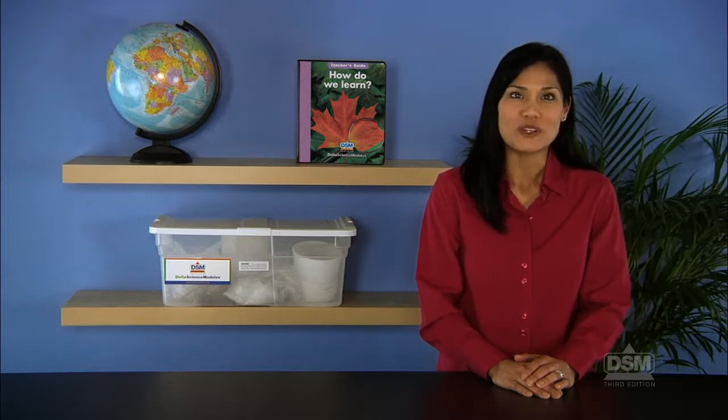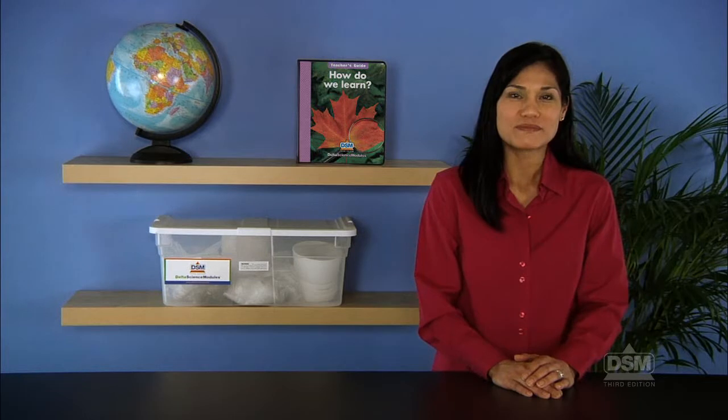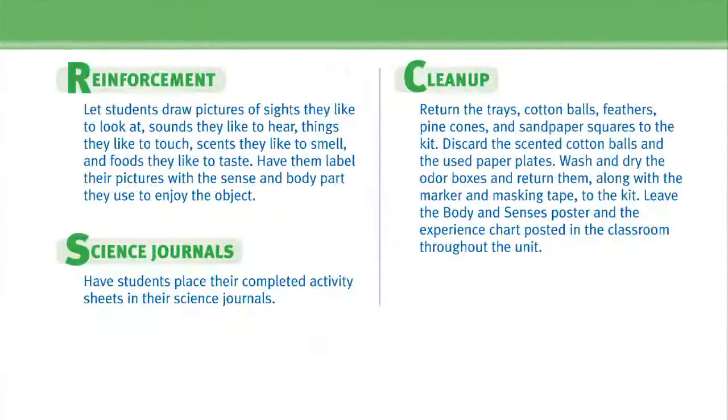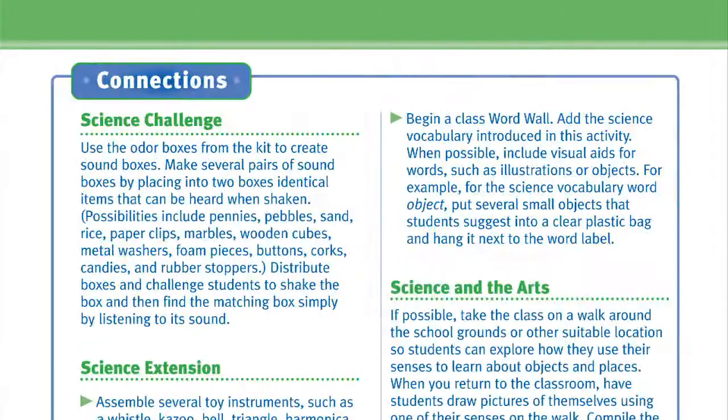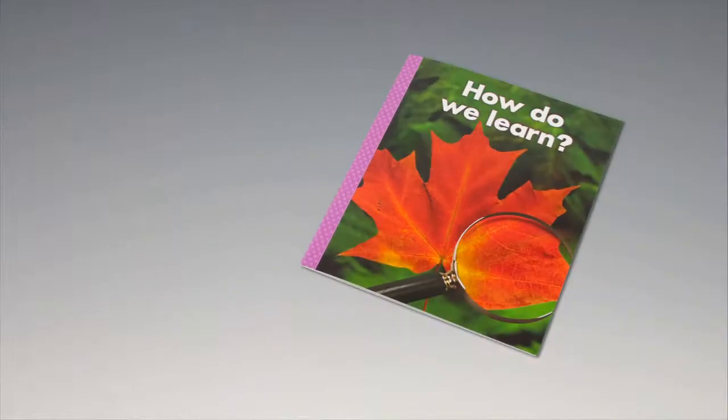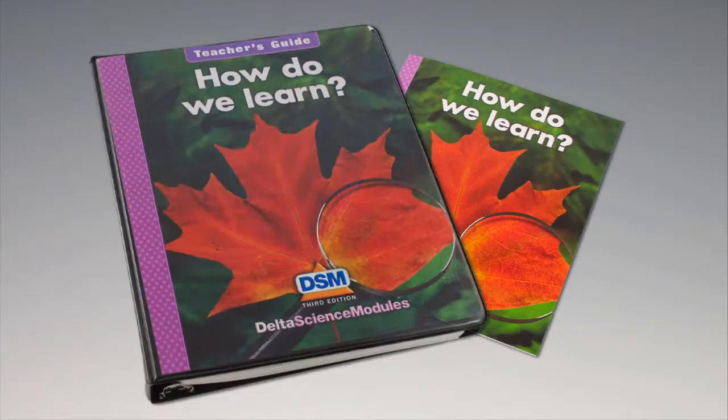To conclude the activity, discard the cotton balls and used paper plates. Wash and dry the odor boxes and return them along with the other materials to the kit. Leave the body and senses poster and the experience chart posted in the classroom throughout the unit. For science background, reinforcement activities, curriculum connections, and information about the Delta Science Readers, please consult your DSM Teacher's Guide.